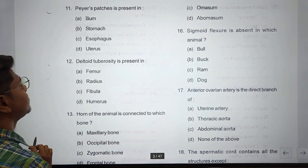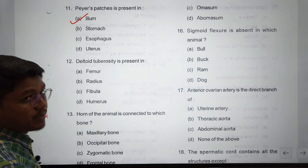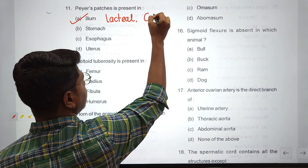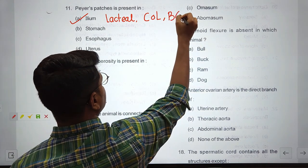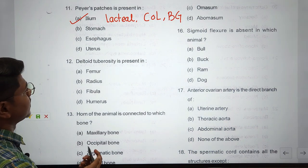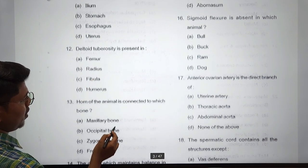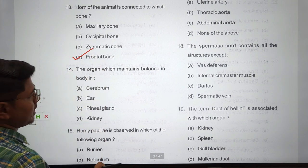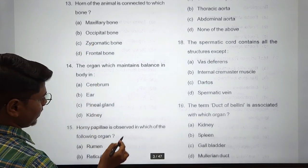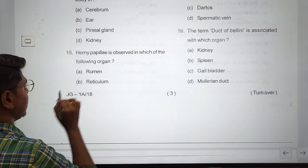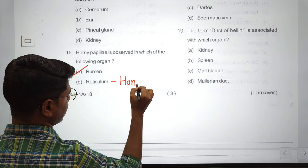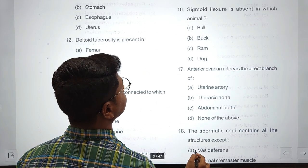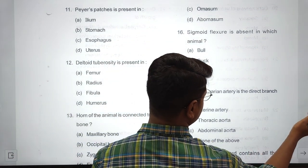Question 11: Peyer's patches is present in ileum. There are some other features of ileum - you will find lacteals which are lymphatic vessels, crypts of Lieberkühn, and Brunner's glands. Deltoid tuberosity is present in humerus. Horn of the animal is connected to frontal bone - this is the process of frontal bone. The organ which maintains balance in body is ear. Horny papilla is observed in rumen. In reticulum you'll find horny comb appearance, and in omasum you will find the laminae - primary, secondary, and tertiary laminae.